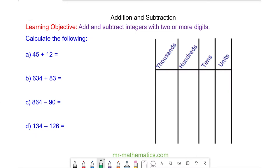Hello and welcome to our lesson on adding and subtracting with integers. We're going to use the column method to solve each of these problems, and to help with the column method we're going to use the place value table. So we have 45 plus 12, which is 4 tens and 5 units add 1 ten and 2 units.